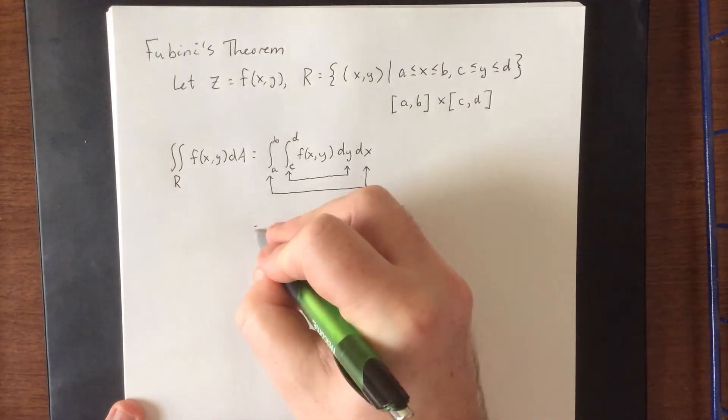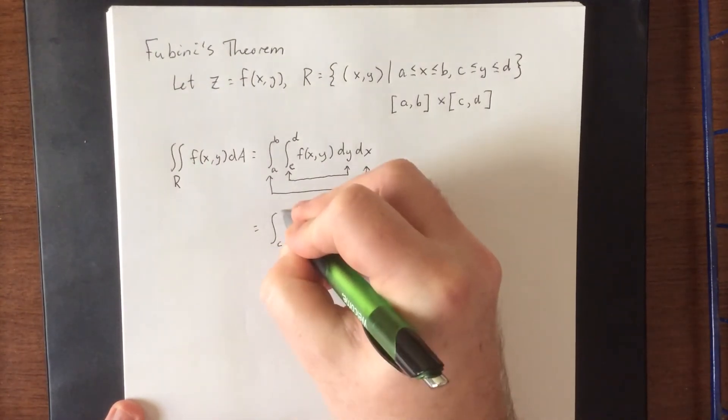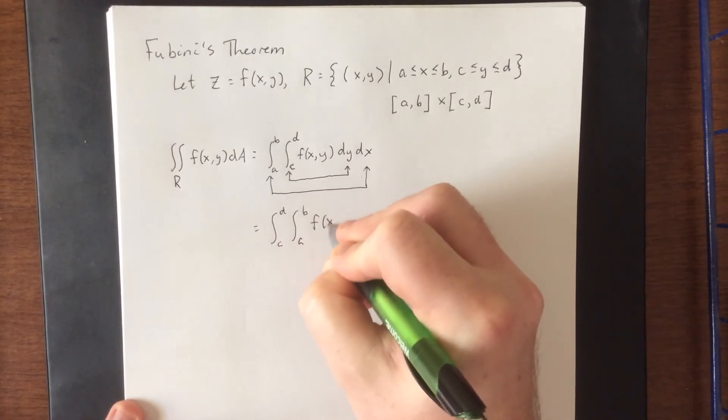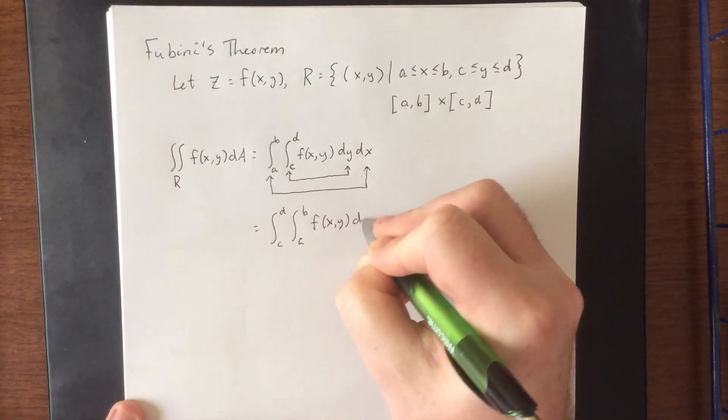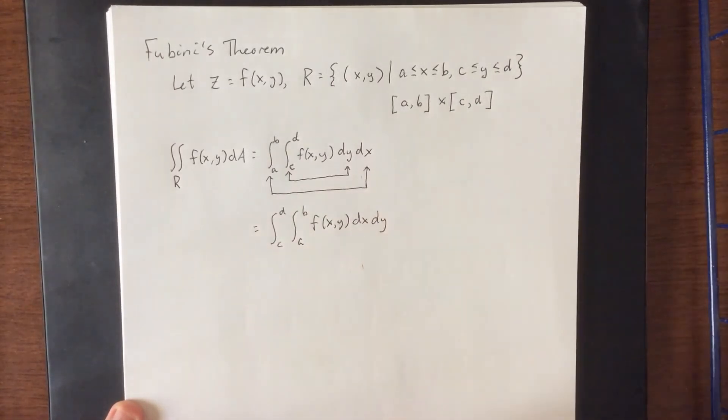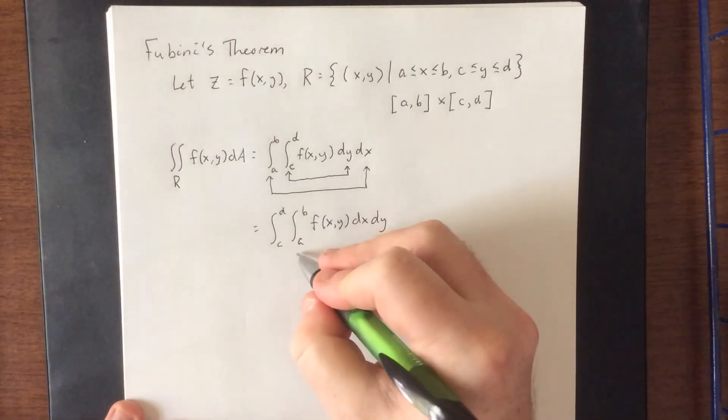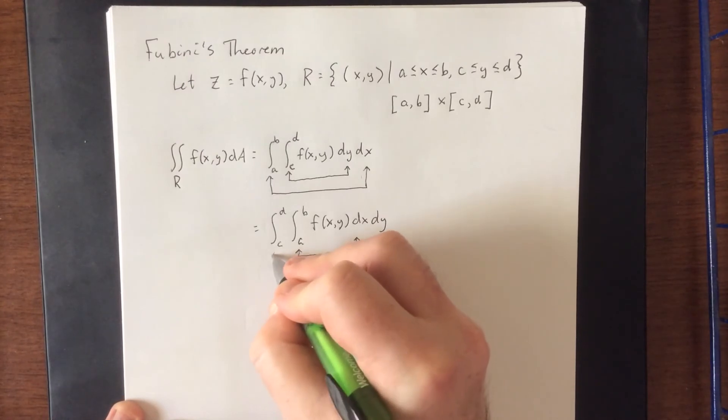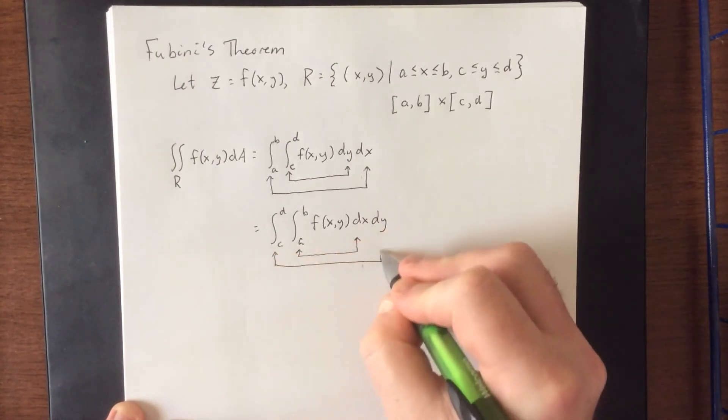Fubini's theorem also states that you can reverse that order with no penalty. Instead of integrating with respect to y first, you can integrate with respect to x first. But once again, each integral goes with its corresponding variable.